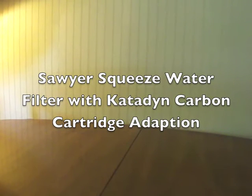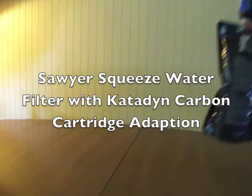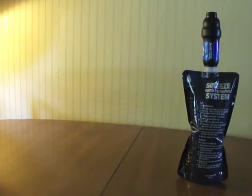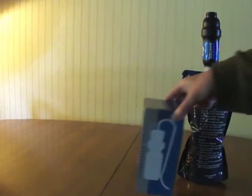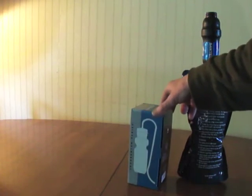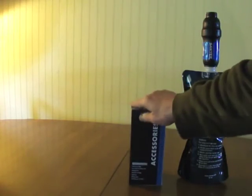Today I am going to demonstrate how to adapt a Sawyer squeeze filter system so you can remove chemical contamination like chlorine from your water using a Katadyn carbon cartridge.